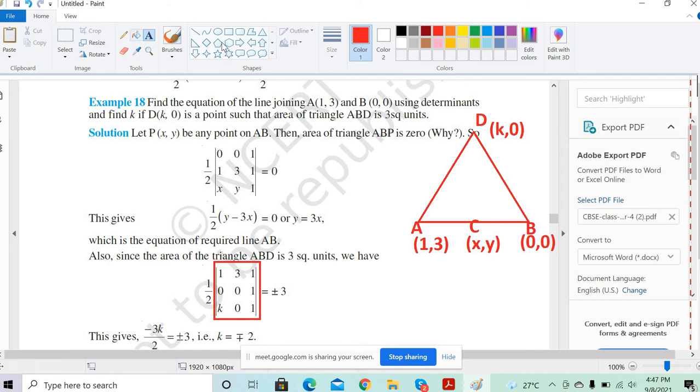Now, this question is asking you, is using the determinant method. Otherwise, you know, what is the equation of the line? Y minus Y1 equals M times X minus X1, correct? Yes, sir. M is the slope. We can use that method also.